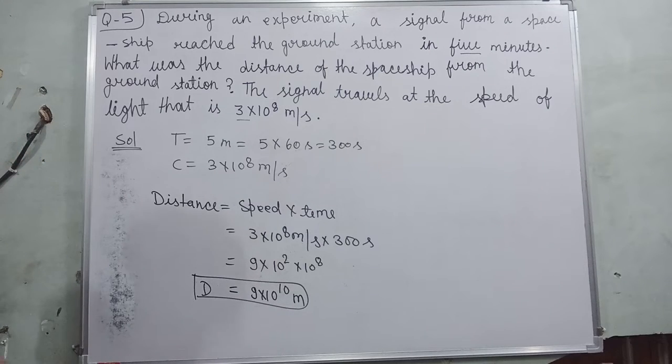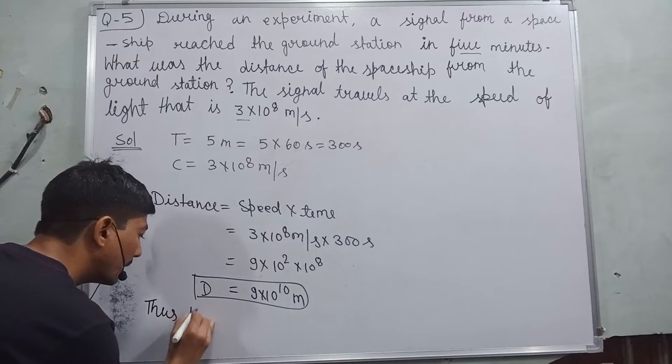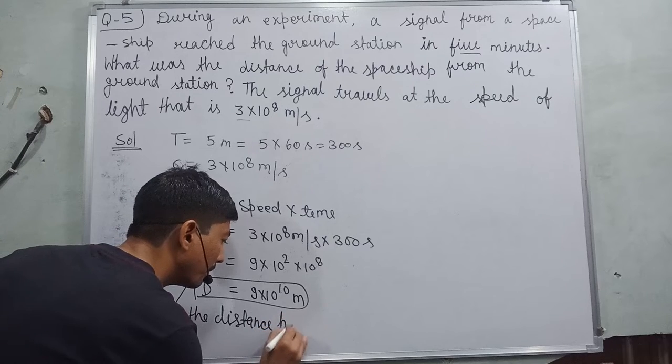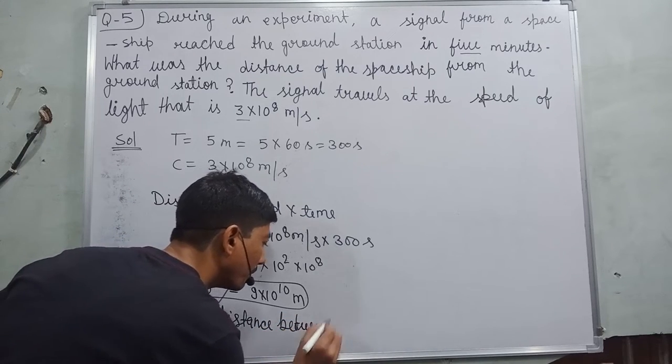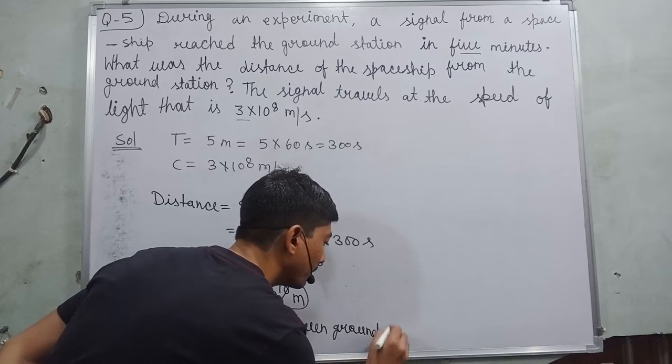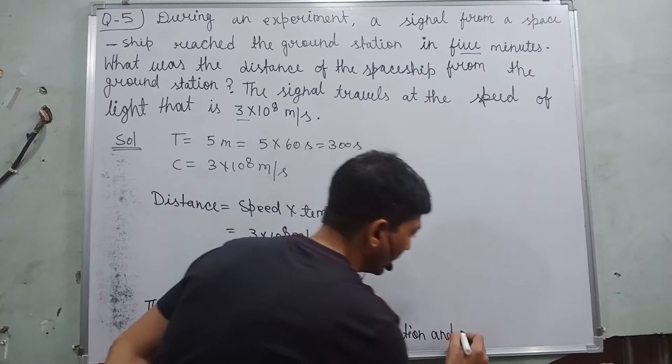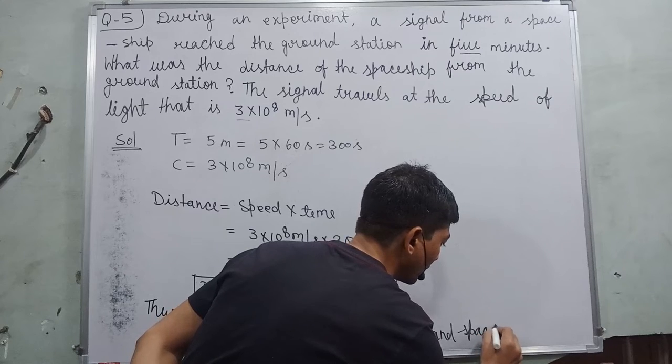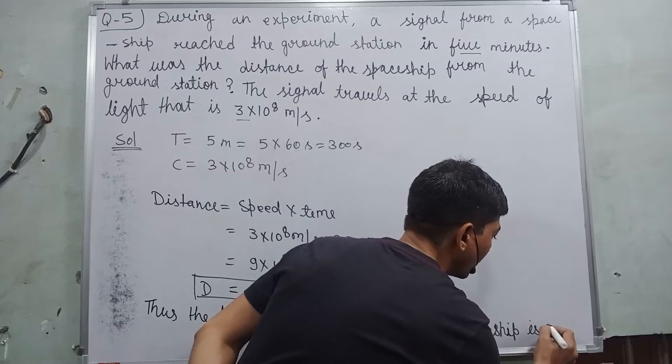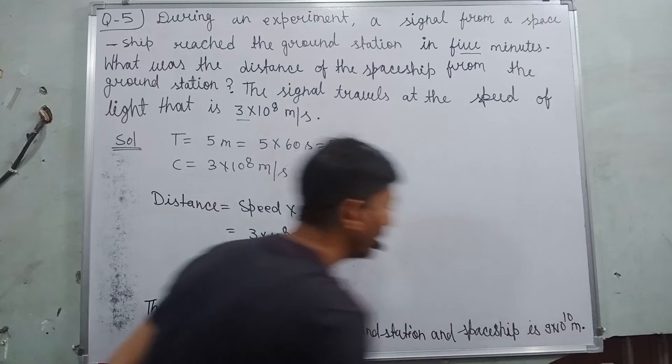So how much distance will it cover? It will cover 9 × 10¹⁰ meters. Thus, the distance between ground station and spaceship is 9 × 10¹⁰ meters. This will be our answer.